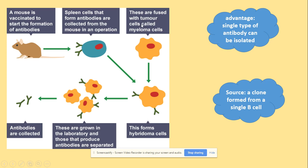Why fuse with tumor cells? Because tumor cells undergo uncontrolled mitosis — it's cancer — so we can very quickly produce clones of these myeloma cells. Those fused antibody-producing cells with the tumor cells form hybridoma cells. We then grow the hybridoma cells in the lab, and by continuing to grow them, we can produce many, many clones of this antibody.